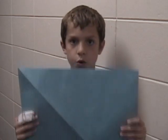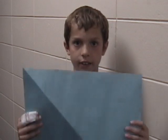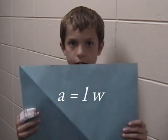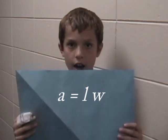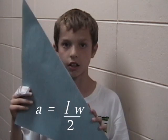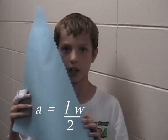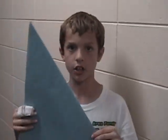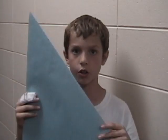The area of a square is length times width — just figure it out, it's not a myth! The area of a triangle is the same thing, cut in half! Look at all the cool things we've learned about math!